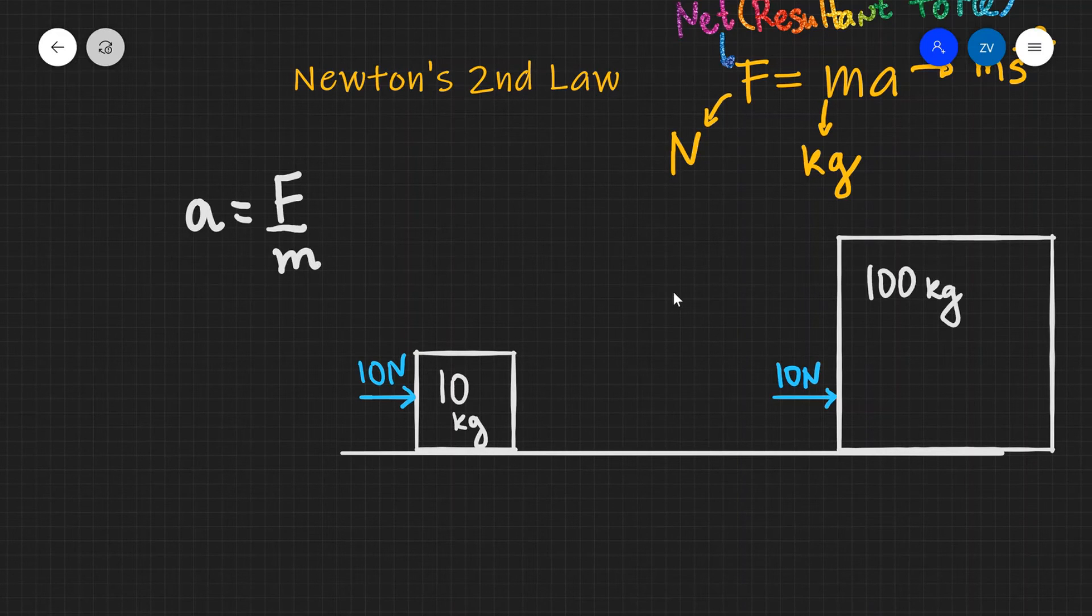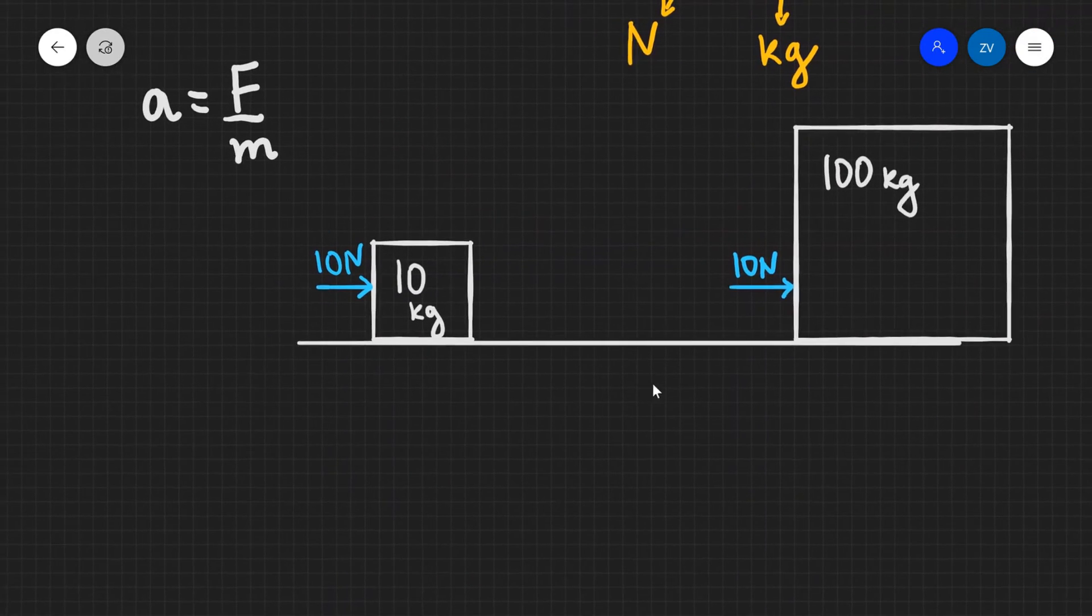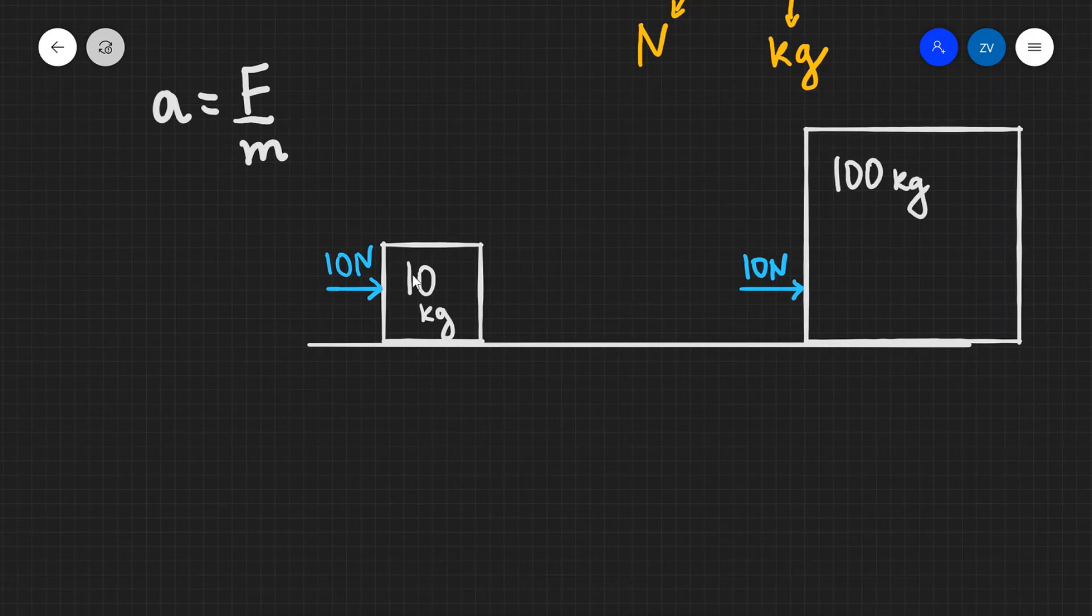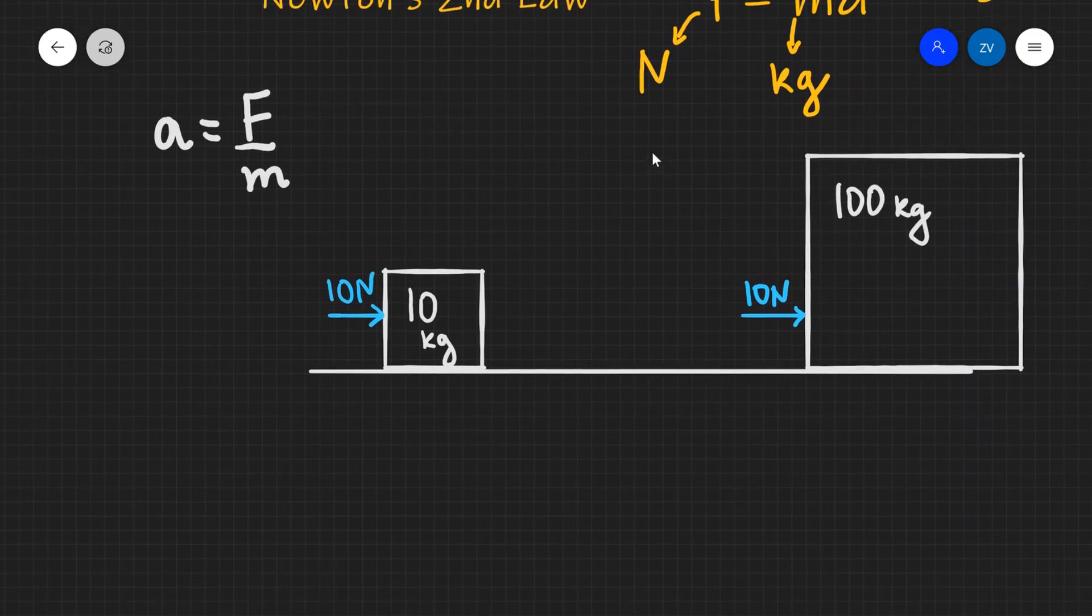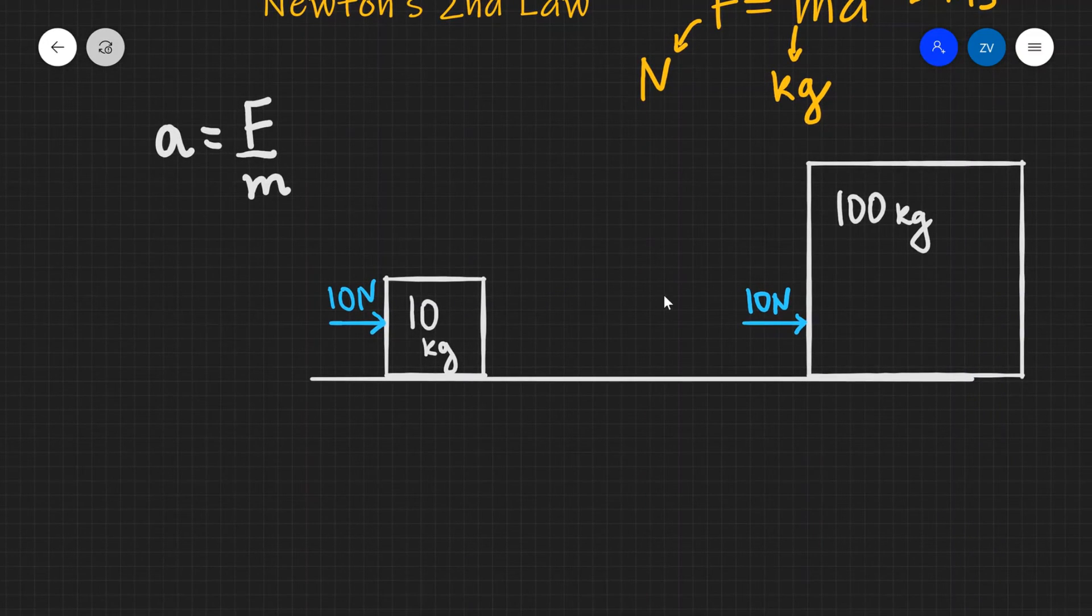Now let's apply this to a couple of examples. We have two objects. One is a 10 kilogram object. The other one is a 100 kilogram object. Both of those objects have a 10 Newton force acting horizontally across. And what I would like you to find is the acceleration. This will be a perfect opportunity for you guys to pause this video and quickly attempt that question.